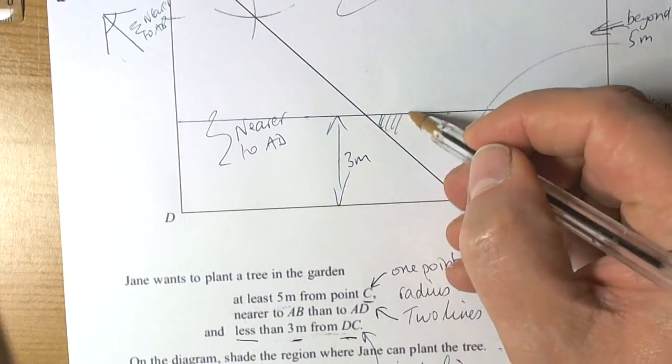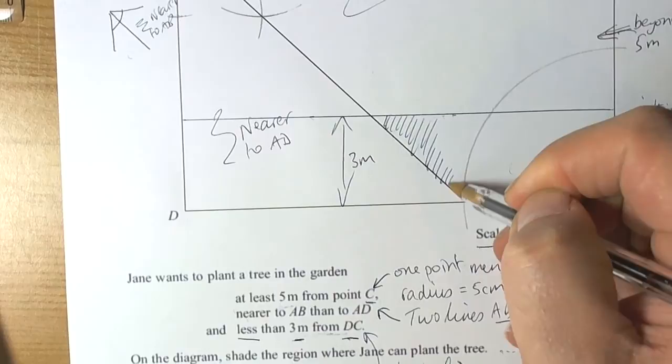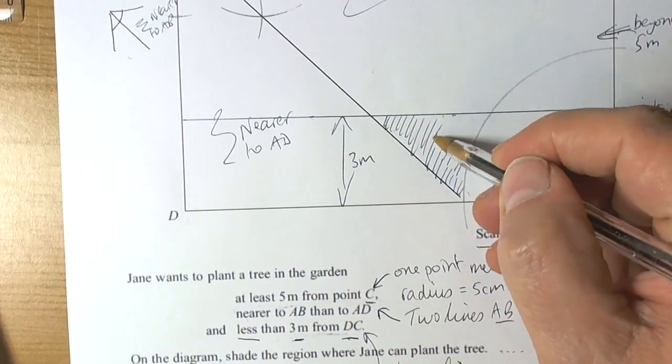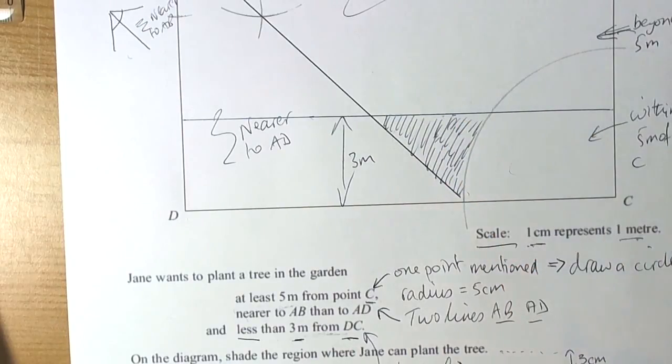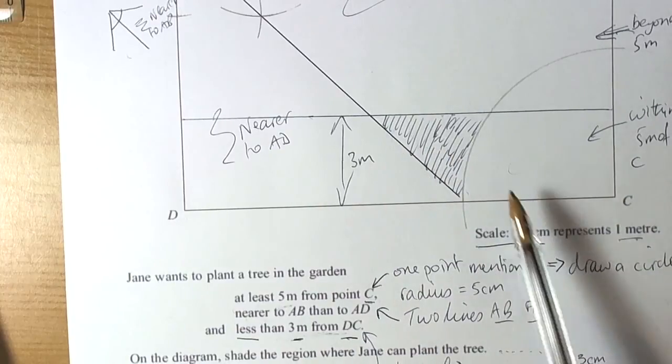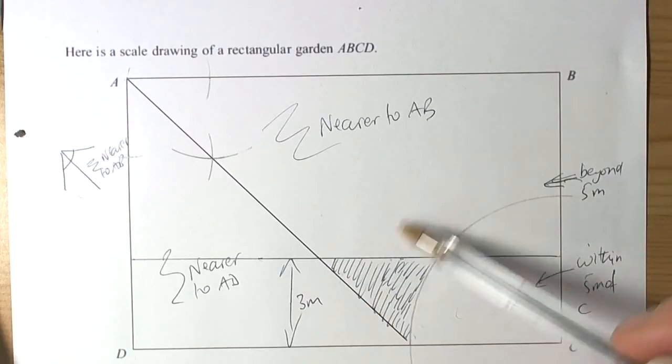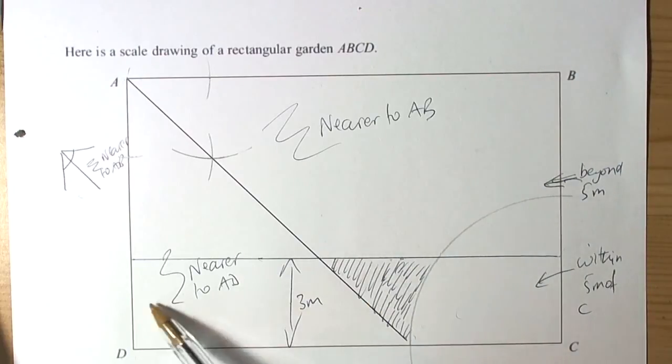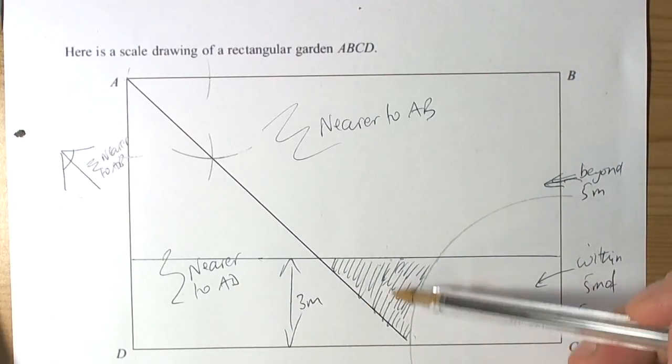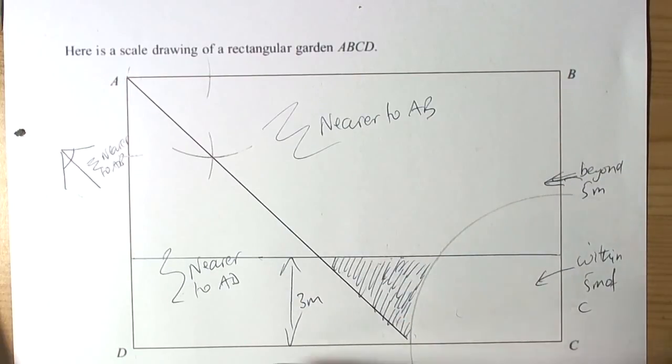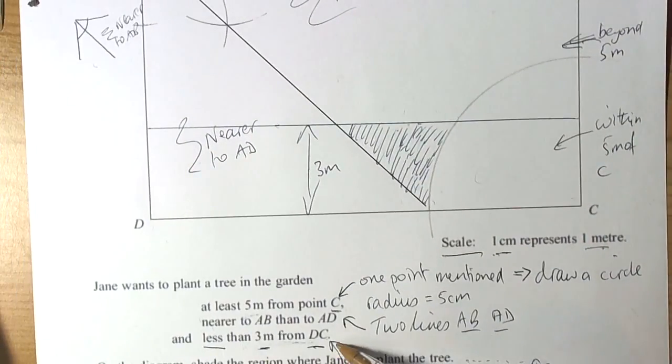The question is asking us to shade this part of the picture. So this is the part of the garden where the tree can be planted. It's more than five metres from C, it's nearer to AB than AD, and it's within three metres of DC. So we've met all these conditions.